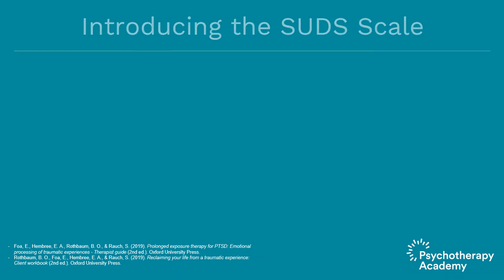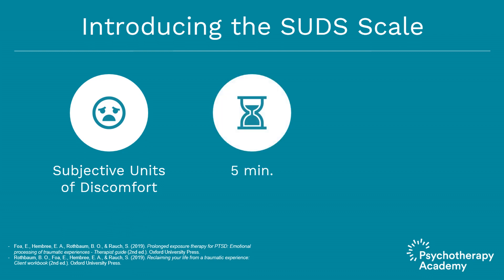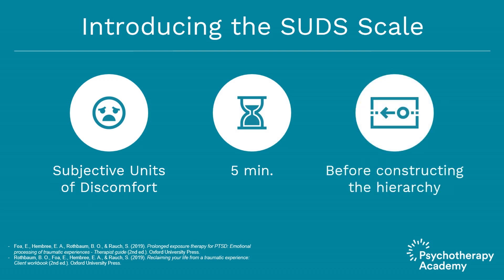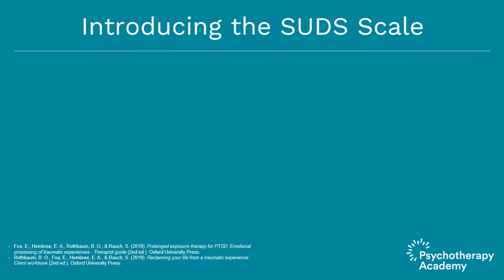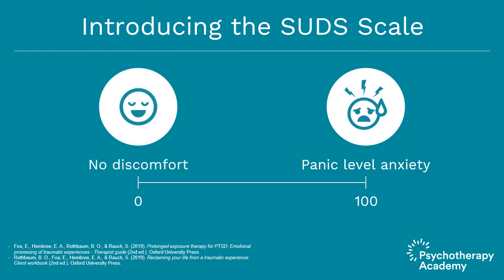After this discussion, we introduce the patient to the SUDS scale — Subjective Units of Discomfort, or some call it Subjective Units of Distress. This takes approximately five minutes. We'll use it before constructing a hierarchy of their feared and avoided situations. It's a 0 to 100 scale: a rating of 100 indicates you're extremely upset — the most you've ever been in your life, panic-level anxiety. A 0 indicates no discomfort at all, perhaps complete relaxation.